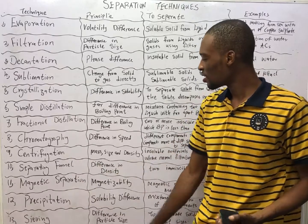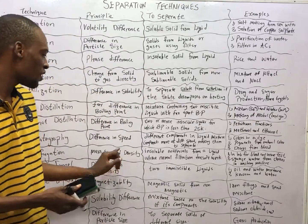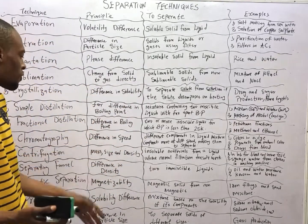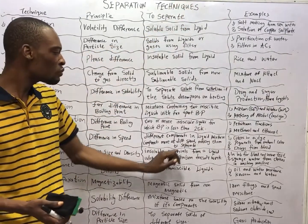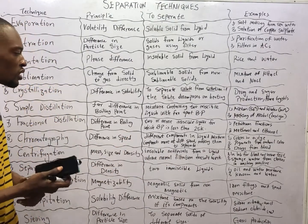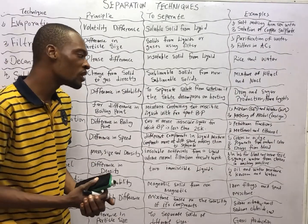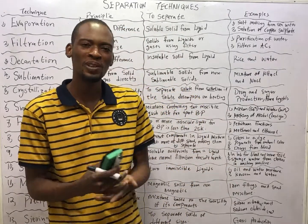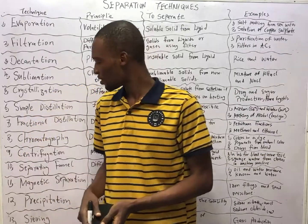Centrifugation works based on the principle of mass, size, and density. Density is simply mass per unit volume. Centrifugation is used to separate insoluble materials from a liquid where normal filtration doesn't work. Examples: in the lab for blood and urine tests, and it is also used to squeeze water from clothes in washing machines.